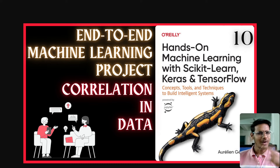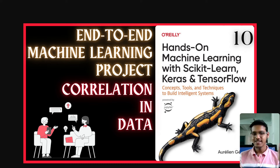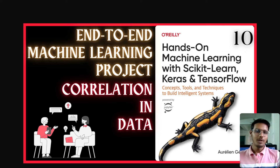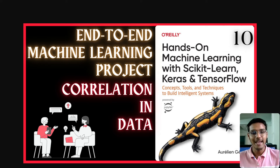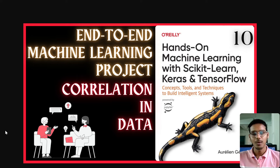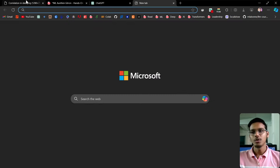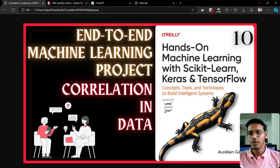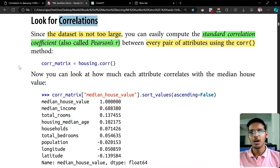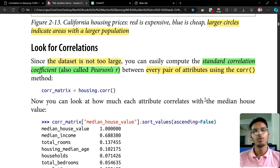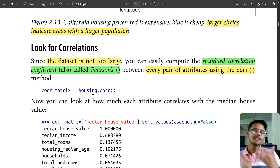Today we are going to see correlation — what is the meaning of correlation, is there a relation? We'll be understanding this. We are seeing the relation between the data. There are a lot of columns and rows, and we'll be seeing that. The next topic is correlations.